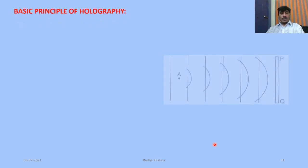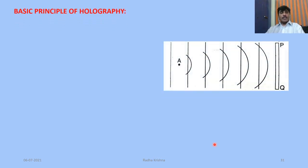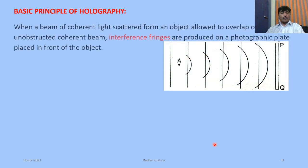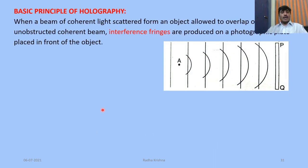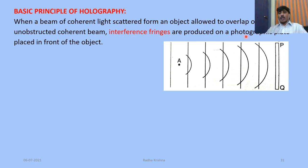The basic principle of holography: when a beam of coherent light scattered from an object is allowed to overlap on an unobstructed coherent beam, a photographic plate is placed in front of the object.